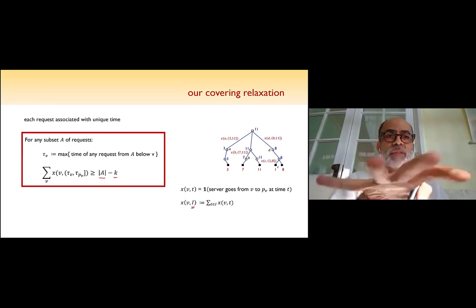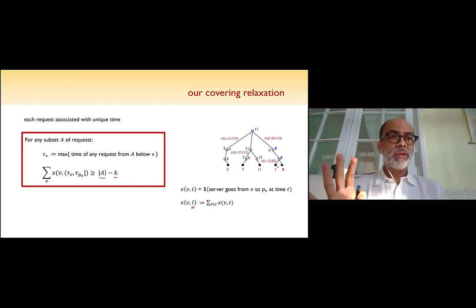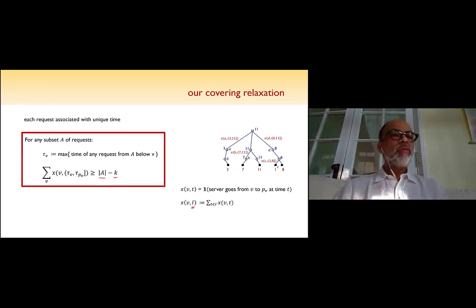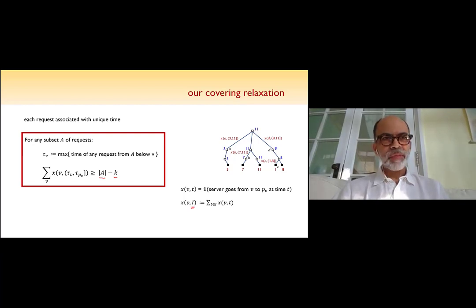Now, given this subset of requests at these leaves, let tau_v be the maximum time that this vertex v sees below it. So here are the values of tau_v. So 11 here just means that in this subtree, there's a request, the latest request has time 11. Okay. So now I've defined these tau_v values for all the internal nodes which have children in this subset, and all the other vertices I'll remove. So I'll just focus on this subtree. And here's what I'm going to say.